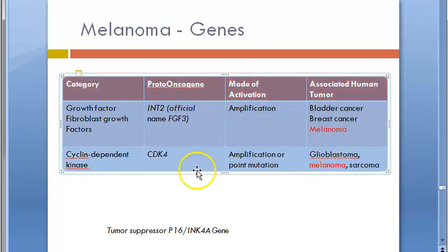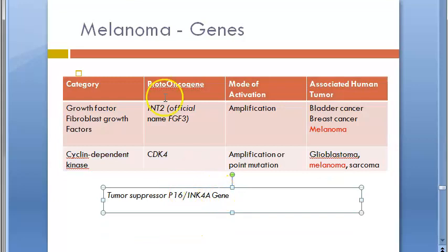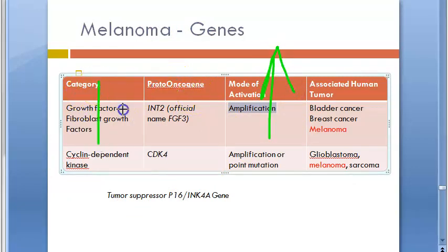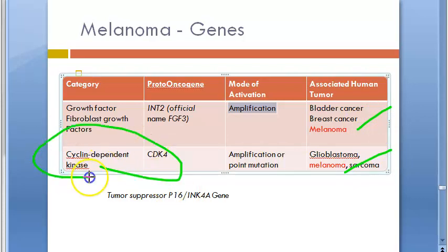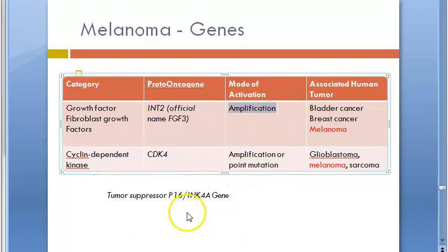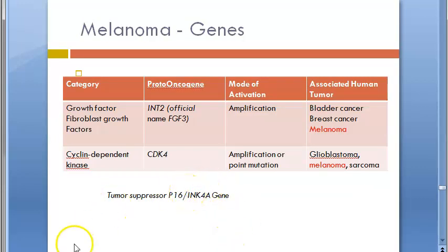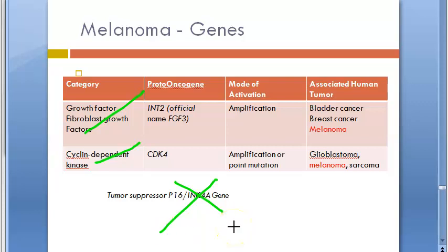Regarding specific genes: the proto-oncogene int2 — also known as fibroblast growth factor (FGF) — can get amplified. The growth factor being amplified is a cause of malignant melanoma. Cyclin-dependent kinase CDK4 can also get amplified or mutated. The tumor suppressor that gets suppressed is p16 INK4A — remember, it is p16, not p53.